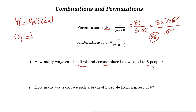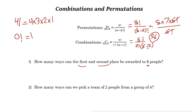Next: how many ways can we pick a team of two people from a group of six? Here, the two people have no ordering, so order is not important. We use the combination formula: C(6,2) equals 6 factorial over 2 factorial times 6 minus 2 factorial, which is 6 factorial over 2 factorial times 4 factorial.